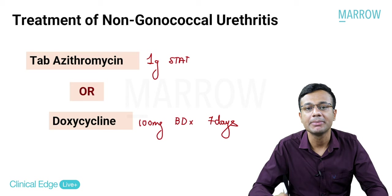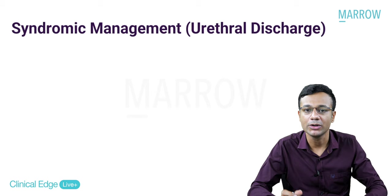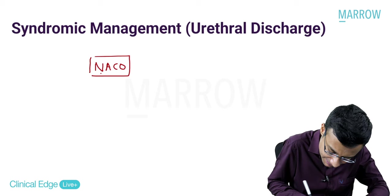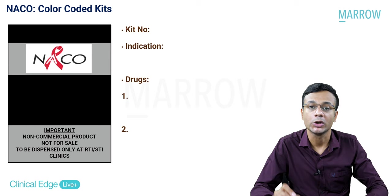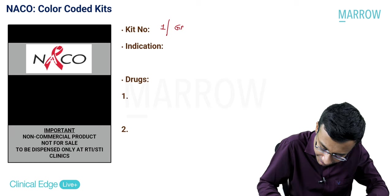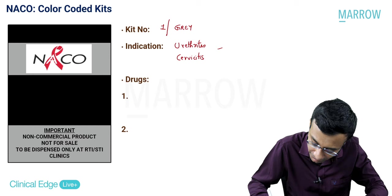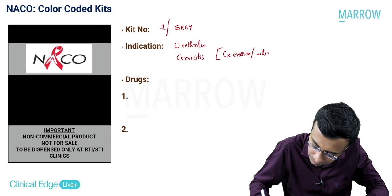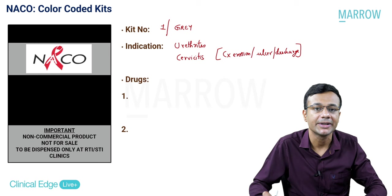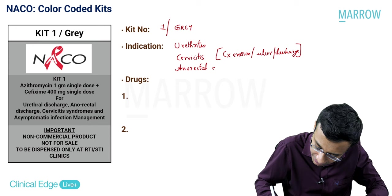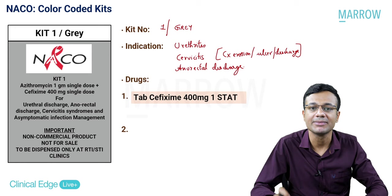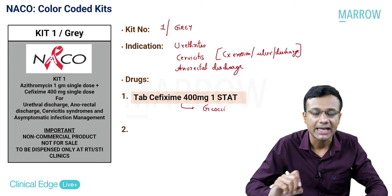Syndromic management: NACO uses kits. Kit number one is gray in color and is used for urethritis, cervicitis - on per speculum exam showing cervical erosion, ulcer, or discharge - and anorectal discharge. Two drugs: cefixime 400 mg stat for gonococci, and azithromycin 1 gram stat to cover chlamydia.